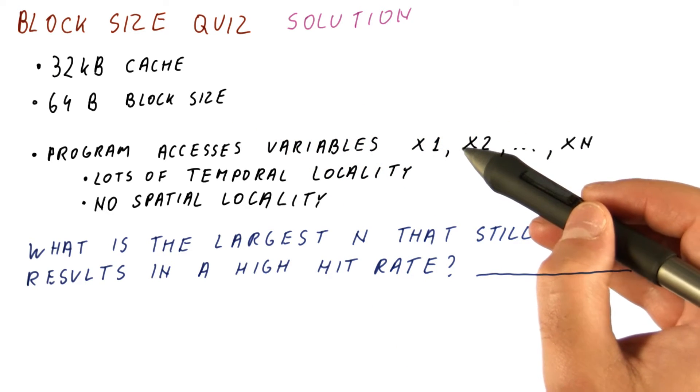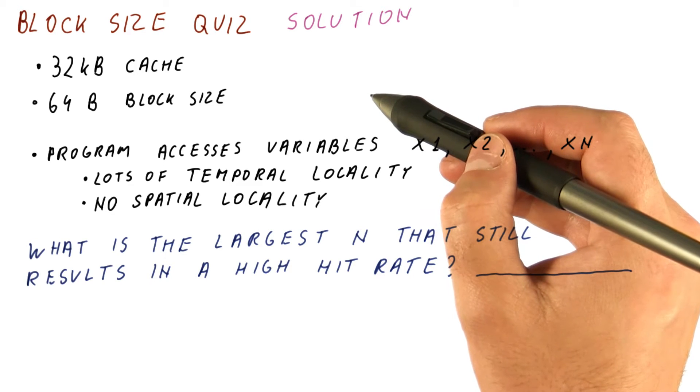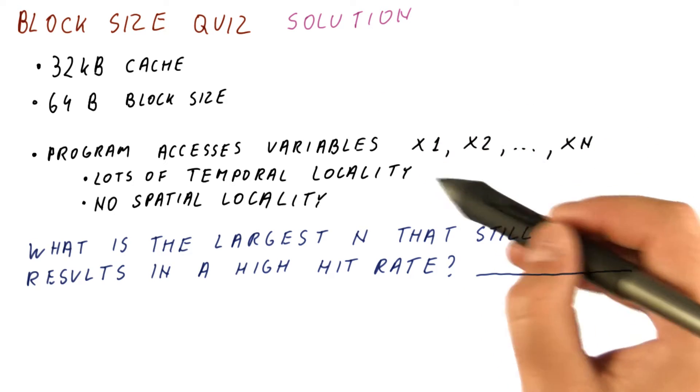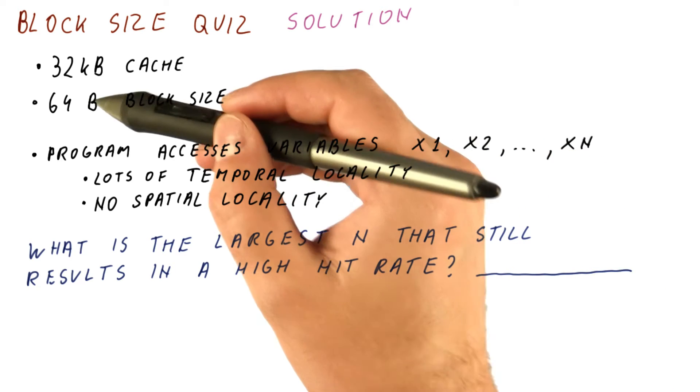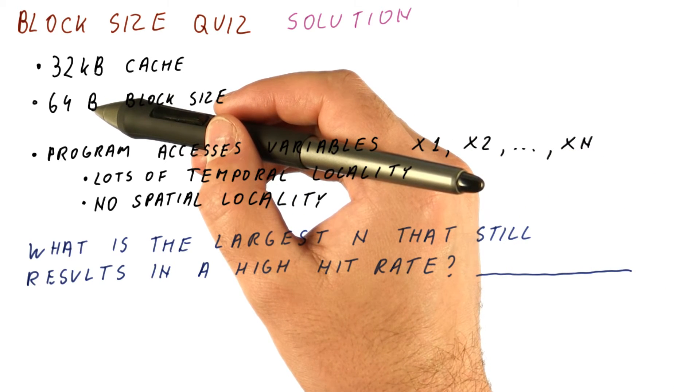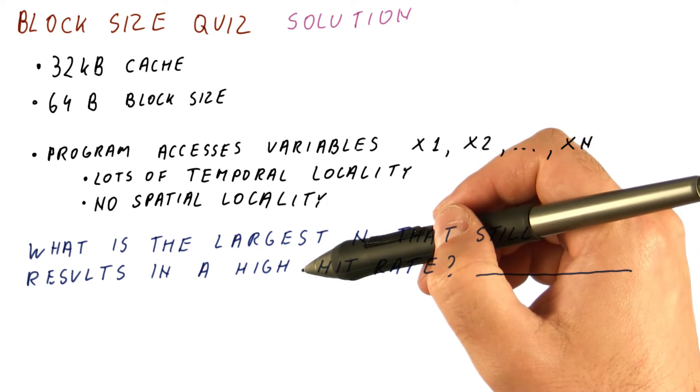When we access x2, same thing. We will bring 64 bytes worth of stuff that doesn't include any of the other variables. So every time we access one of these variables, we will need 64 bytes worth of space in the cache.